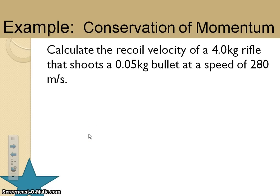So let's try calculating a recoil velocity of a 4-kilogram rifle. We've got mass there. And it shoots a 0.05-kilogram bullet, but that's also a mass. So I'm going to call that mass 2, and I'm going to call this one mass 1. What is it that's going a speed of 280 meters per second? I'm going to guess that that is the bullet. So I'm going to call that velocity of the bullet.